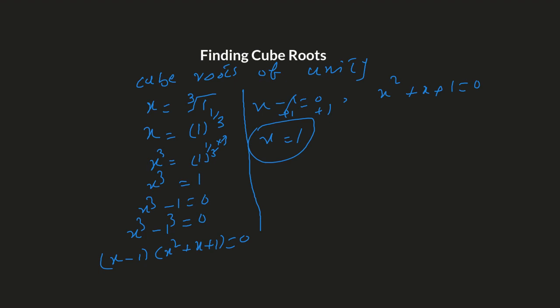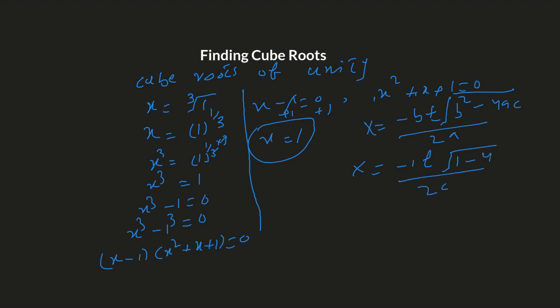We can't factorize this quadratic since it's an irreducible factor, so we use the quadratic formula. Here a equals one, b equals one, and c equals one. So X equals negative b plus or minus the square root of b squared minus 4ac, all over 2a. Plugging in the values: negative one plus or minus the square root of one minus four, over two.